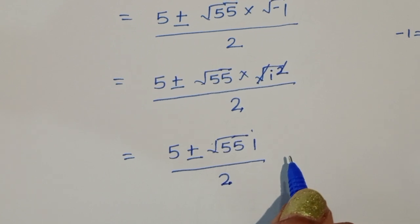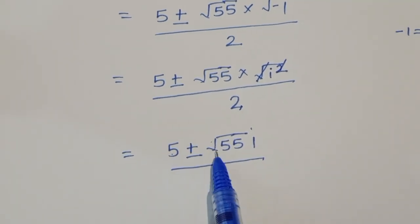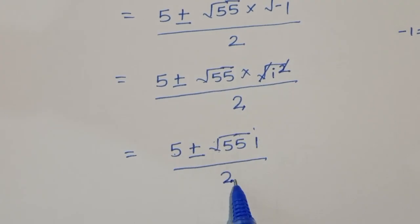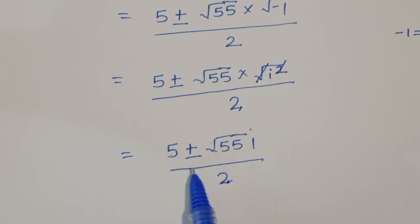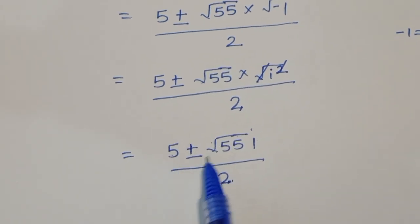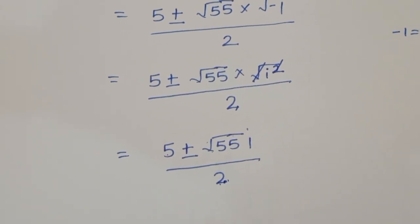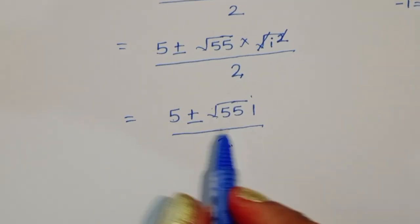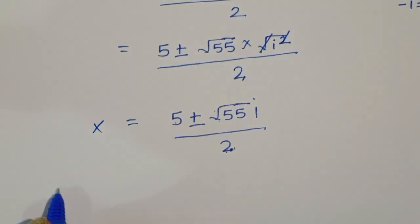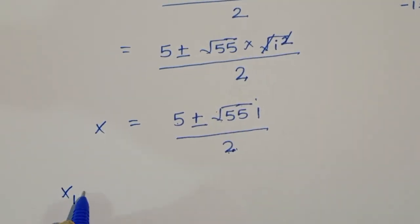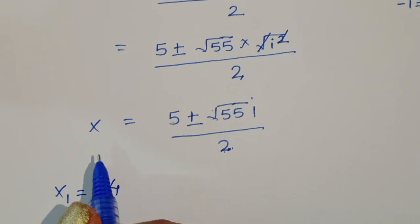So we get two complex values: x₂ equals (5 plus square root of 55 i) divided by 2, and x₃ equals (5 minus square root of 55 i) divided by 2. In this way we obtained three values of x. The first value is x₁ equals minus 4.